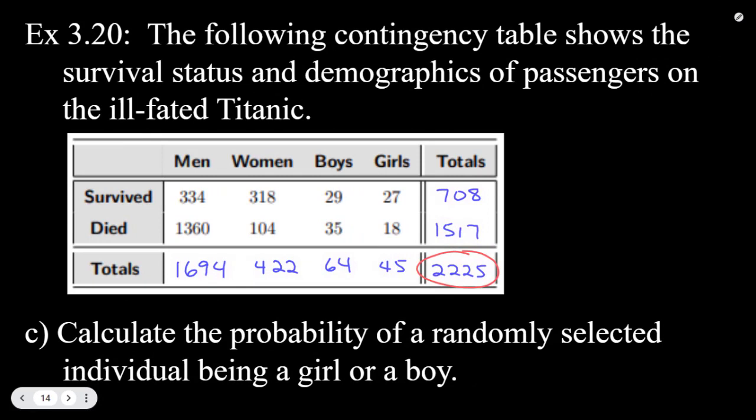Part C, calculate the probability of a randomly selected individual being a girl or a boy. So this one, it doesn't specify if they survived or not, so this is just probability of a girl or a boy. And we can use our more generic formula since these events are disjoint. The total number of girls on the trip was 45, so that would be 45 out of 2225. The total number of boys, 64 over 2225.